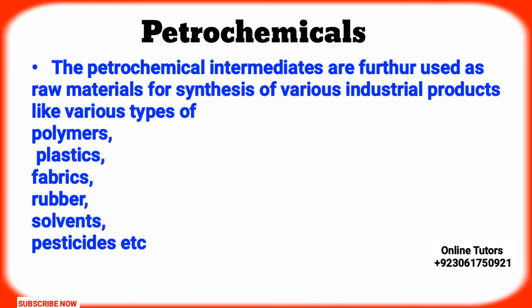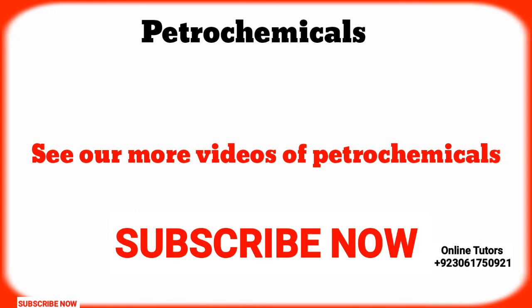The petrochemical intermediates are further used as raw materials for synthesis of various industrial products like various types of polymers, plastics, fabrics, rubber, solvents, pesticides, etc. Some common petrochemicals are discussed in our other videos.